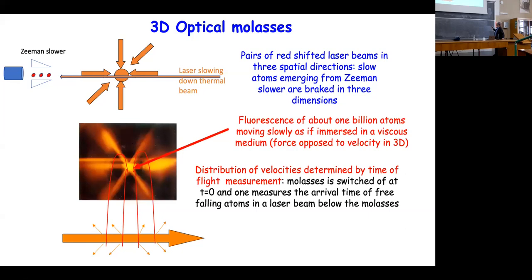That bright cloud contained about one billion sodium atoms moving slowly at velocities of a few meters per second. To measure the temperature, at t = 0 all lasers are cut off. The atoms start with their initial velocities and fall in Earth's gravitational field. Below the molasses, a horizontal laser beam causes fluorescence when the atoms fall through it. The delay between shutting down the lasers and observing fluorescence allows reconstruction of the velocity distribution.